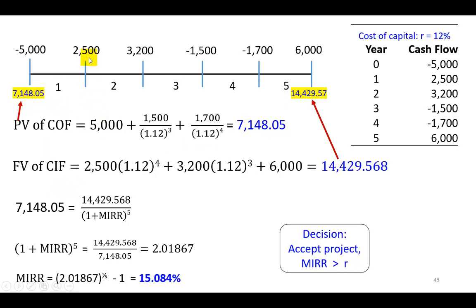And then separately, for the positive cash flows, which are the cash inflows, we're going to find their terminal value, which is the same thing as their future value. For example, this $2,500 here, we're going to find its future value. Remember, this is the future point. So from here to here, how many years? Four years. One, two, three, and four.